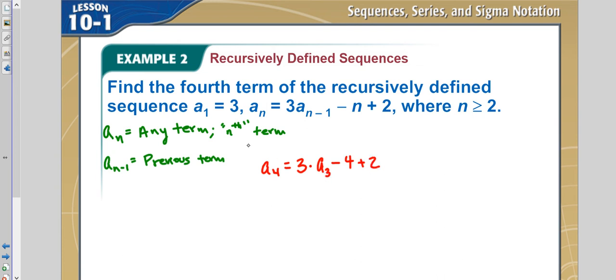Do we know the third term? No, we don't. So what we have to do then, if we don't know the third term, is we have to try to find the third term. So to find the third term, we would say that's 3 times the previous term, which what's previous to 3? The second term minus term number, which in this case is 3, plus 2. Well, do we know what the second term is? No, we don't. So we need to find what the second term is.